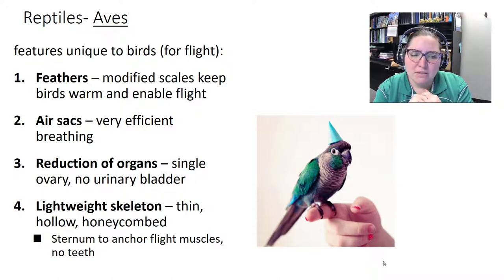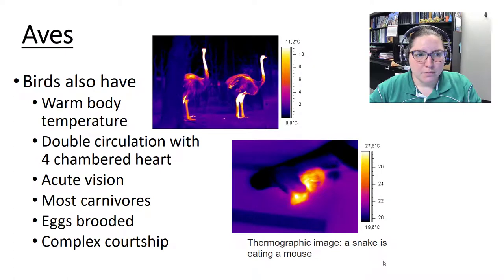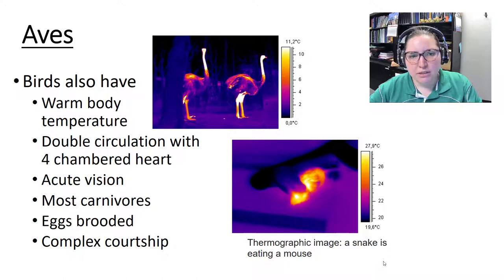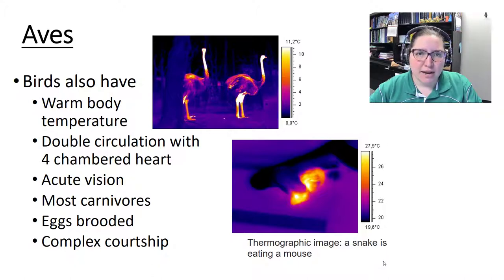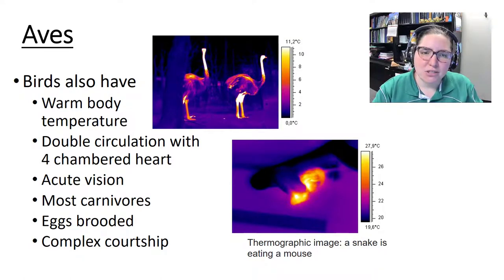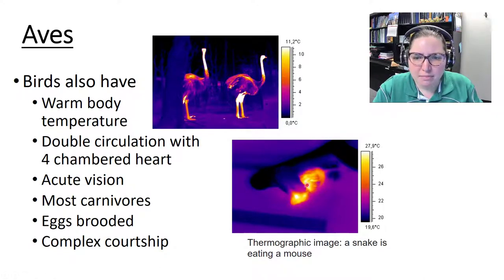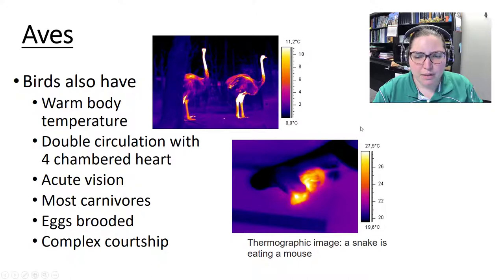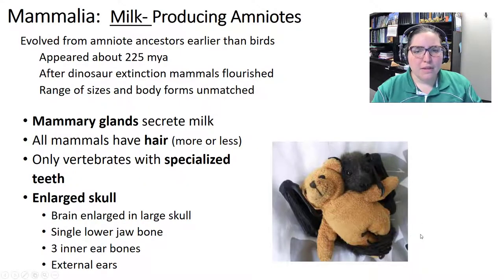Birds have a sternum to anchor flight muscles, a beak and no teeth, a warm body temperature, double circulation with a four-chambered heart, good vision, and are mostly carnivorous. Most care for their eggs and often have complex courtship behaviors. Thermographic images show ostriches have a warm body temperature while a snake does not.